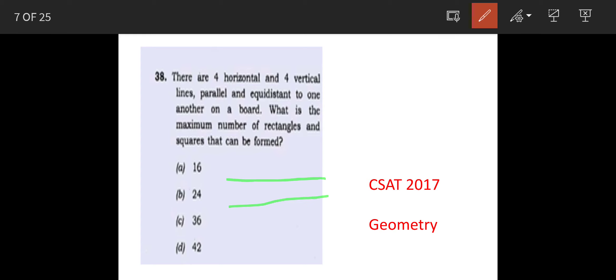The question says that there are 4 parallel equidistant horizontal lines and these are intersected by 4 equidistant vertical lines. So how many squares and rectangles can be formed? Squares will be these ones and the rectangles will be when we consider a combination block of squares and so on.